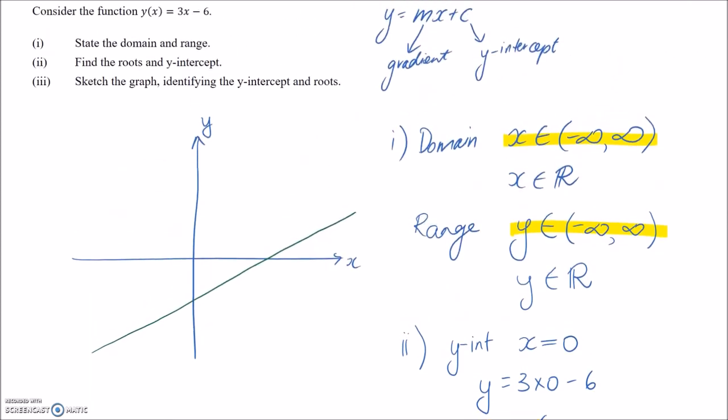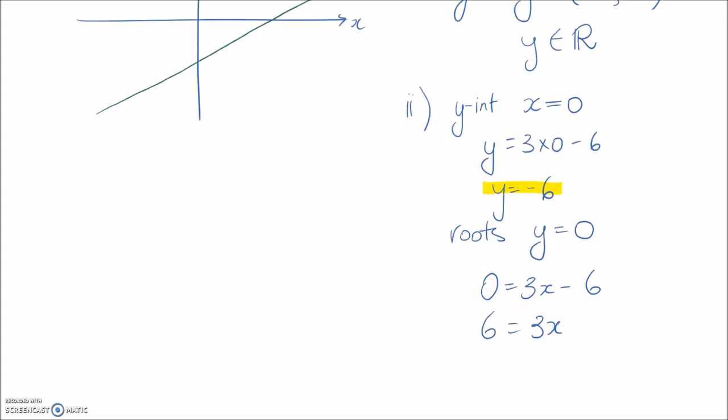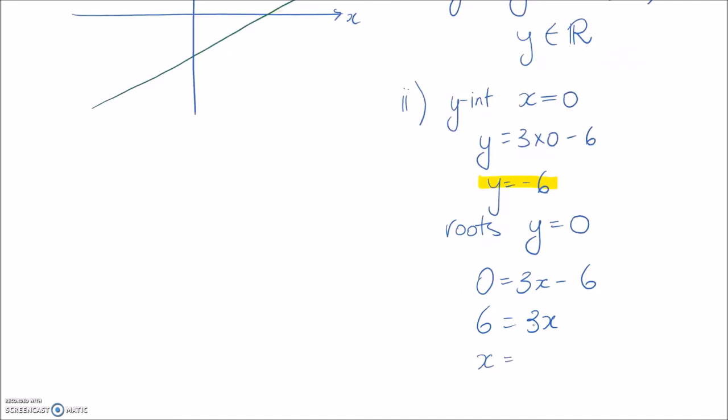So if we sub that in, we're going to get zero here is equal to three x minus six. And then we just need to rearrange for x. So if I shift this to the other side, we're going to get x is equal to, divide by this, so six on three, which is the same as x is equal to two. So that there is our root.